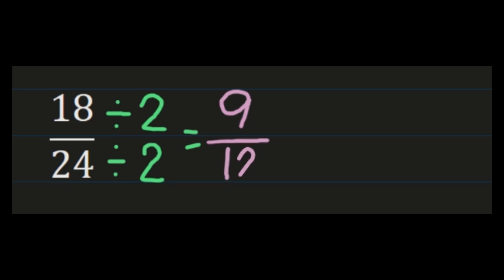So now I'm at nine twelfths, so I need to ask myself, can I simplify nine twelfths? Well, nine and twelve share a common factor of three. So you do need to continue your simplifying process. So you have nine divided by three is three, and you have twelve divided by three is four.